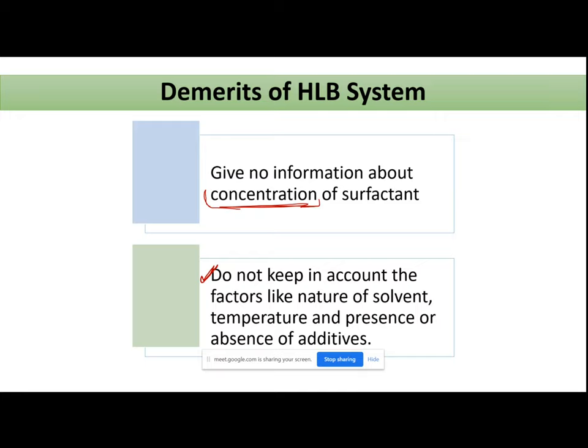Third, the presence or absence of any additive has not been considered in this HLB scale at all. So the second major demerit is that we are not considering other factors which can influence the solubility of our surfactant — such as the nature of solvent, temperature, and presence or absence of some additive. These are the two major demerits of our HLB system.